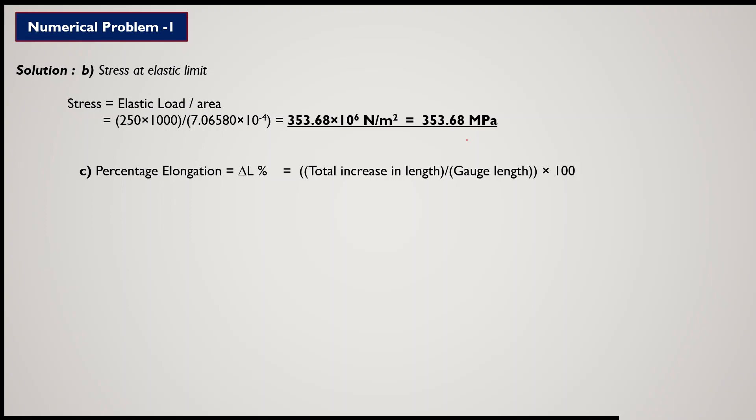The third point is percentage elongation (δL). The formula is: (total increase in length / gauge length) × 100. Substituting the values, the percentage elongation comes out to be 30%.